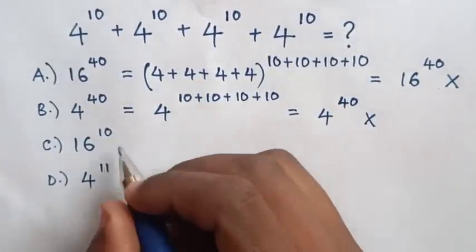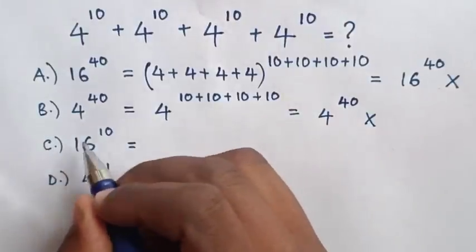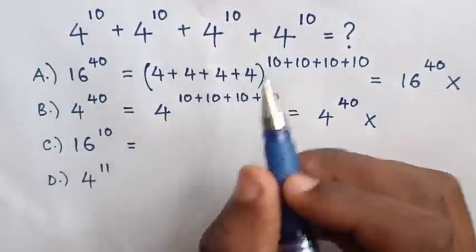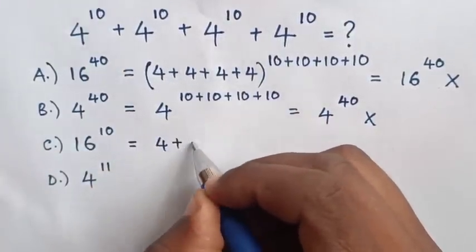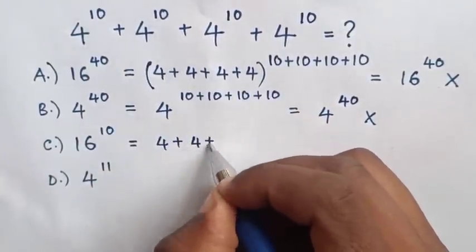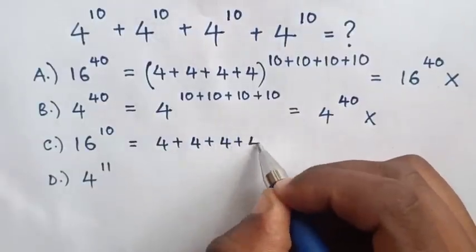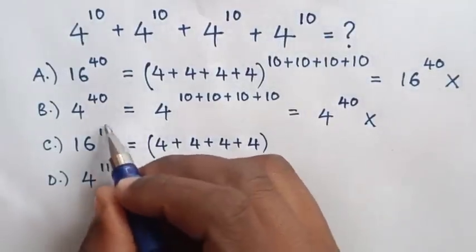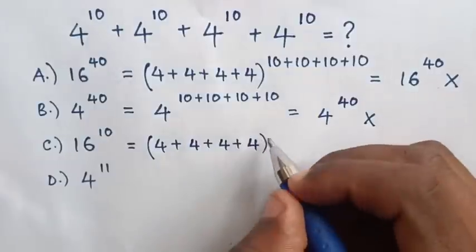For answer C, the result is 16 — which is the sum of these bases: 4 plus 4 plus 4 plus 4 — then in brackets, raised to the power of 10, which is one of the powers.